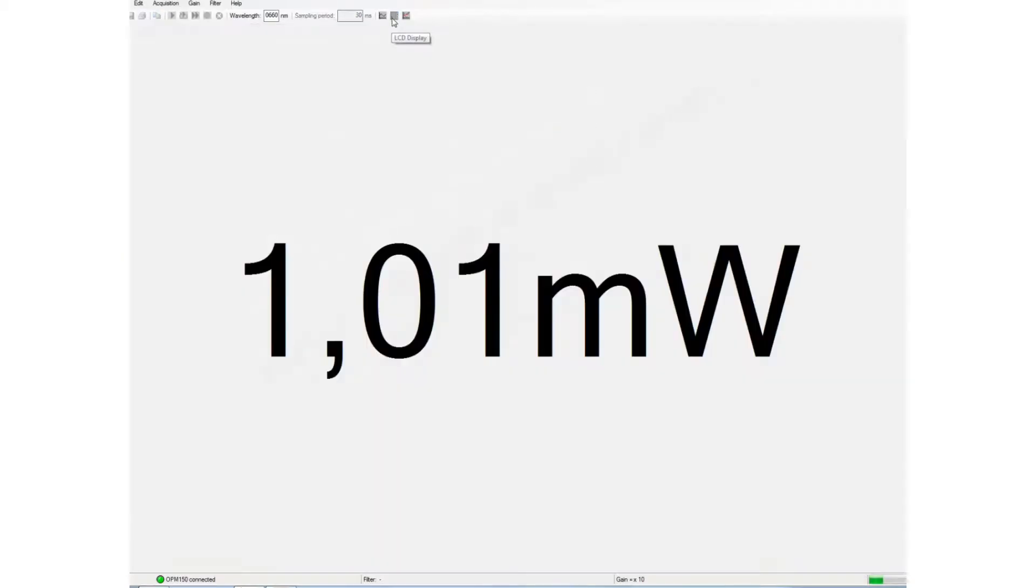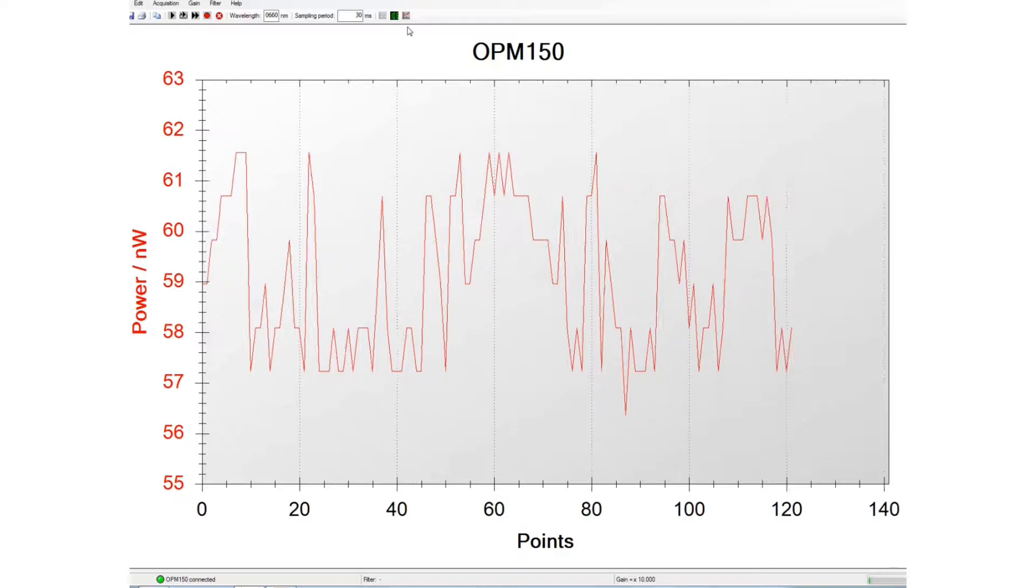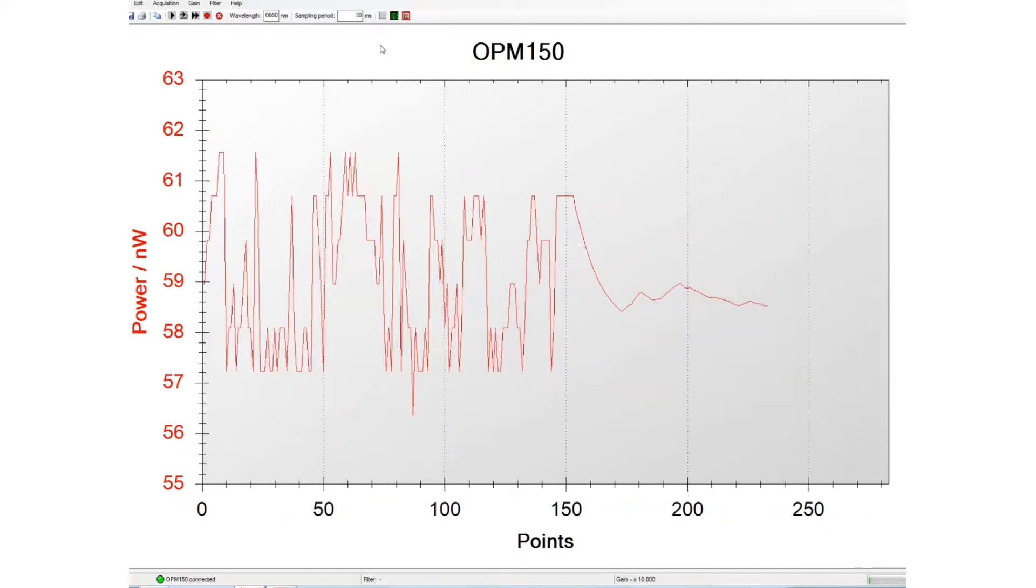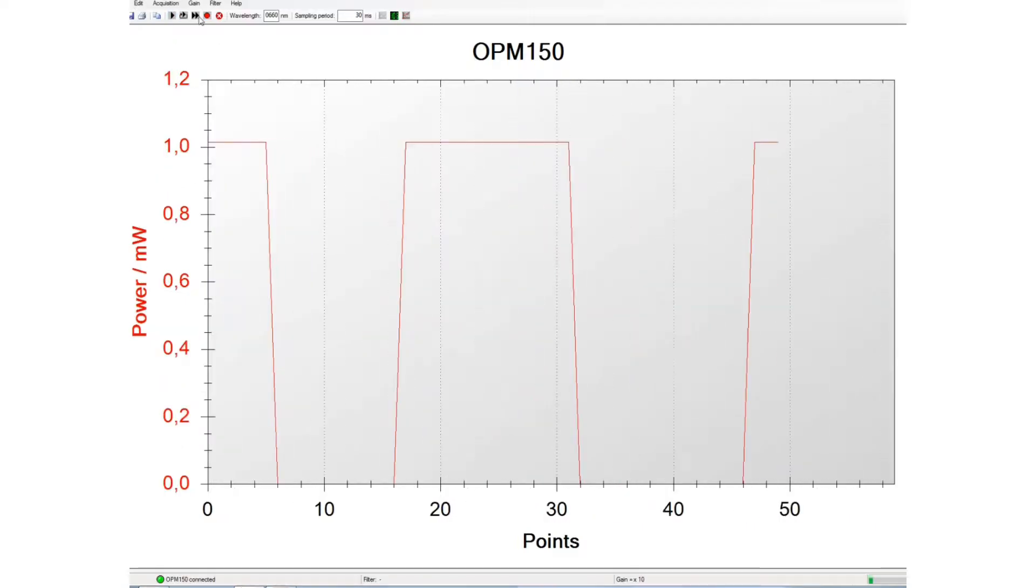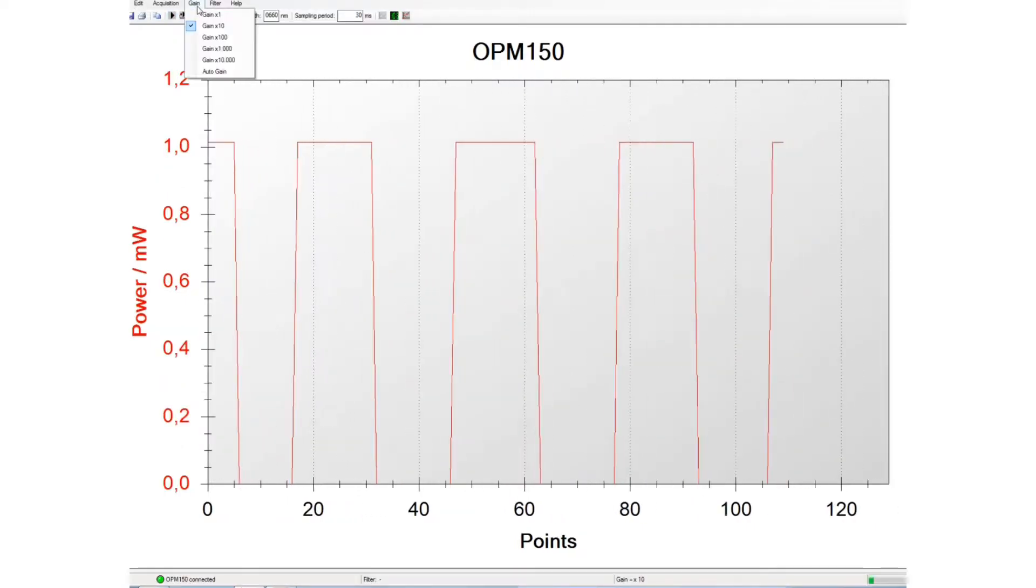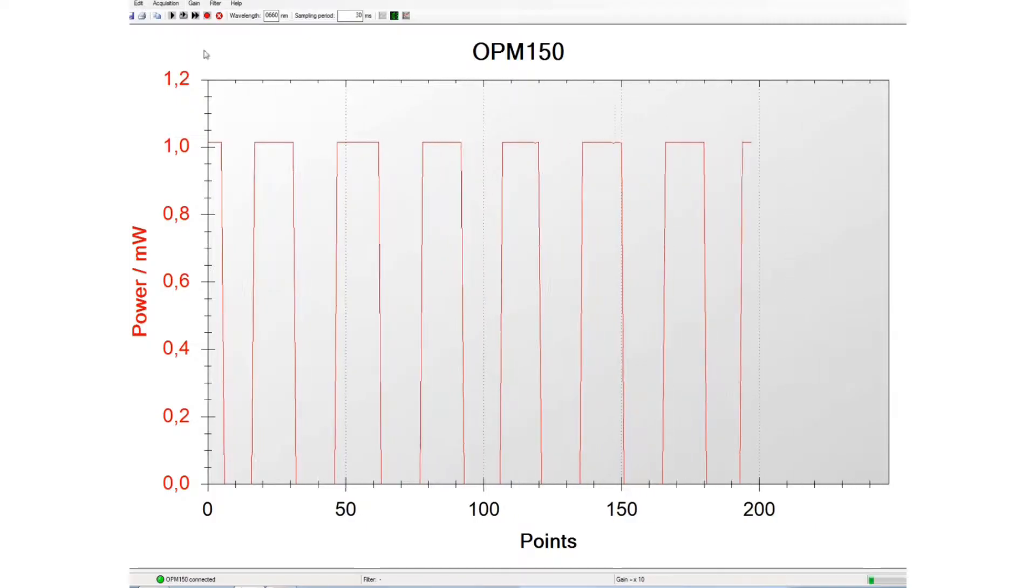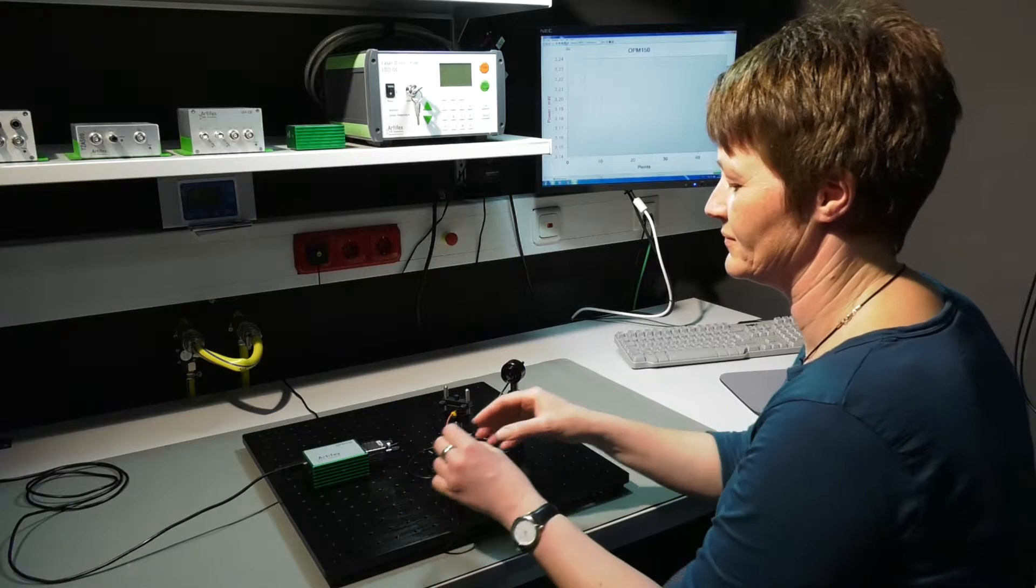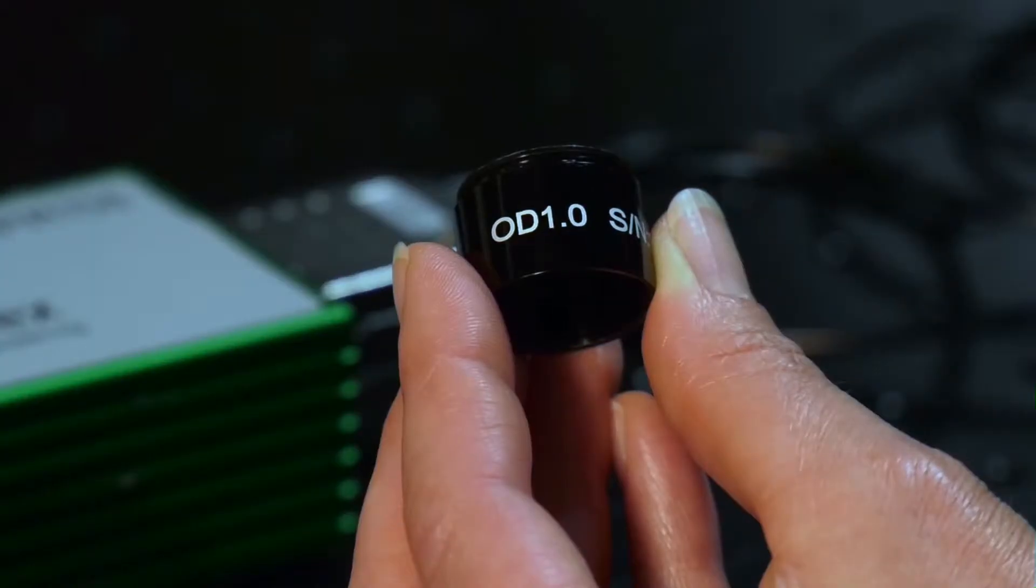The averaging function is useful when measuring noisy sources. There are five gain ranges to allow measurement over six decades of dynamic range. The gain may be fixed or automatically selected.